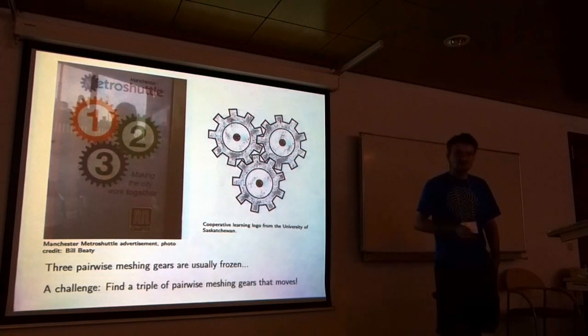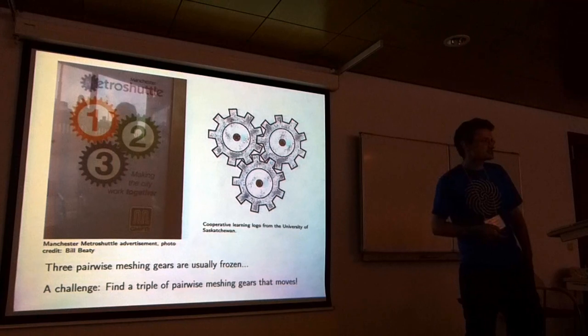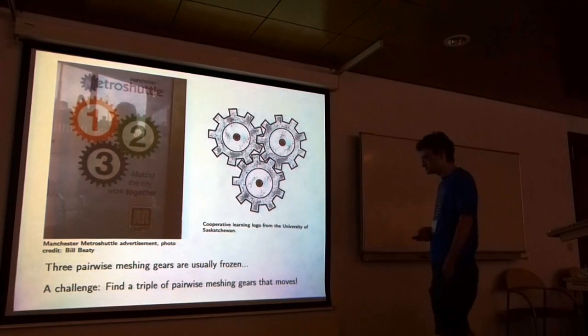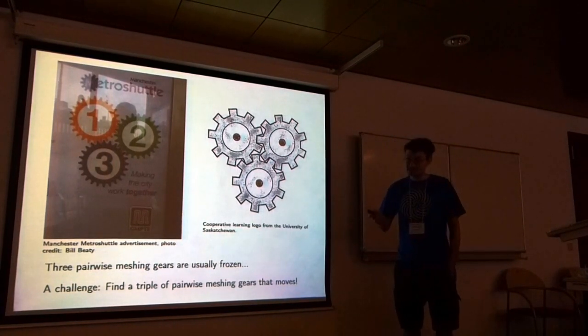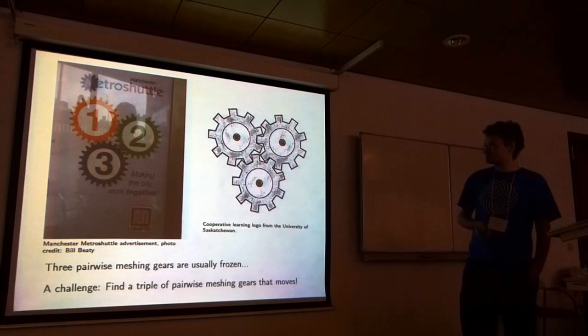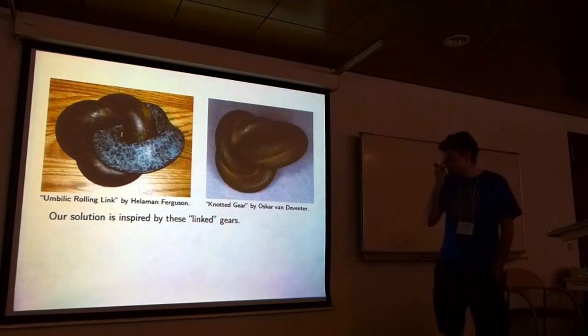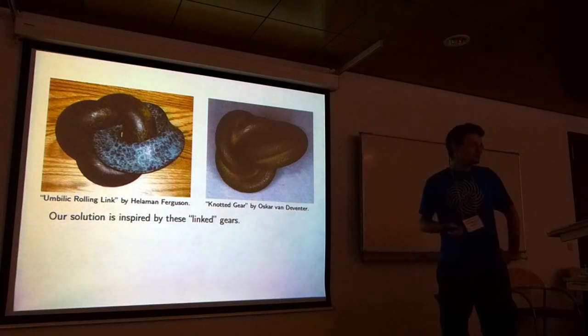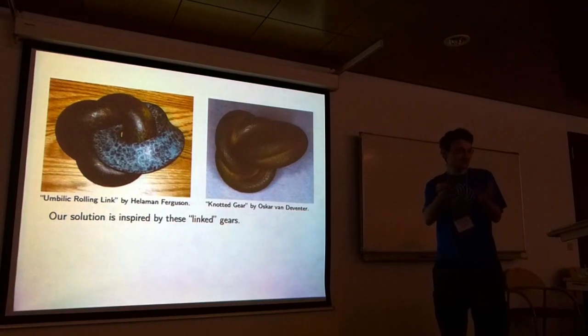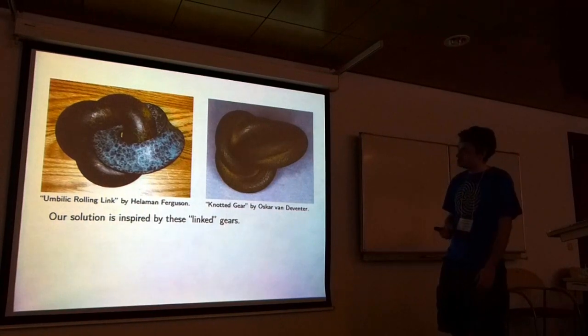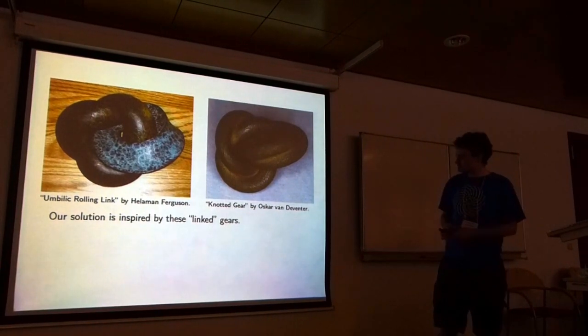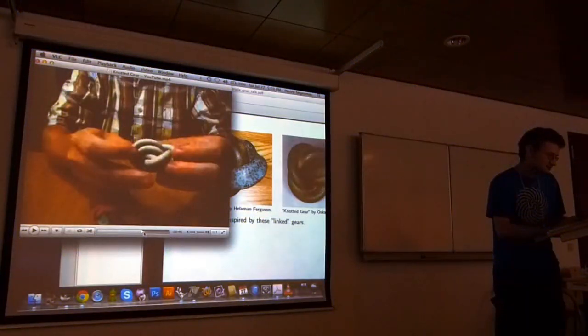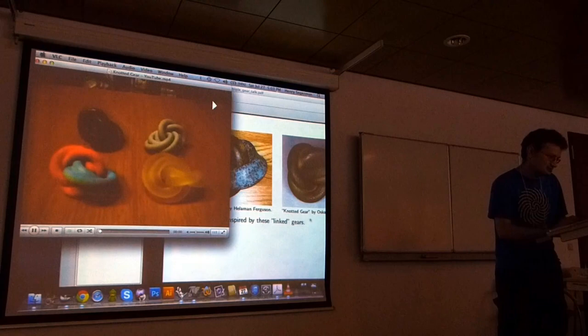So here's a challenge: find a triple of pairwise meshing gears that does move. There's a few different ways to do this, and I'm going to tell you about this triple gear, one of the ways that we've done this. We were inspired by a couple of works, one is an omphalic rolling link by Helen Ferguson. The other is this knotting gear by Oskar van Deventer, and let me show you what the knotting gear is.